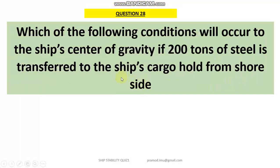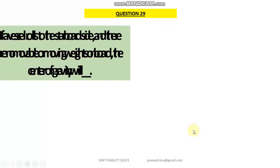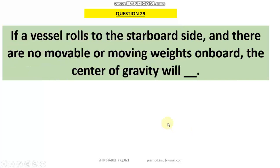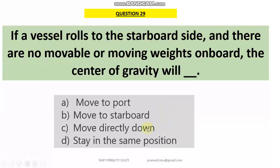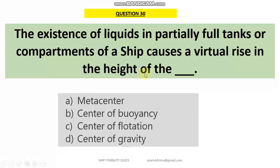Question 28: when 200 tons of stores are transferred to a ship's cargo hold from shore side, the center of gravity will be lowered — that will be the answer. Question 29: if a vessel rolls to starboard and there are no movable or moving weights on board, the center of gravity will remain at the same position. Question 30: the existence of liquids in partially full tanks or compartments of a ship leads to a virtual rise in the height of the center of gravity — that is the answer.